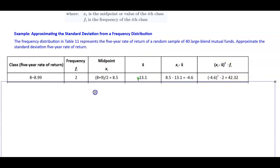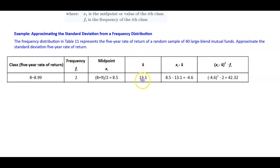For the first row, the first class is 8 to 8.99. The frequency is 2, and the midpoint is (8 + 9) / 2 = 8.5. From the previous example, the sample mean is 13.1. Taking the midpoint 8.5 minus the sample mean 13.1 gives negative 4.6. In the last column, negative 4.6 squared times the frequency of 2 gives 42.32.